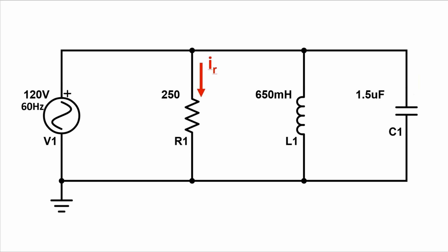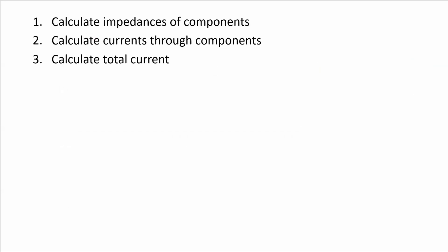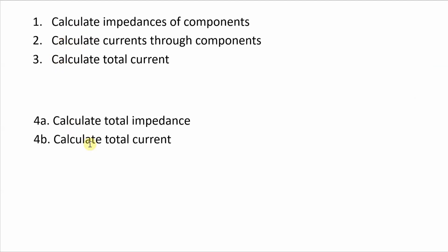I'm also going to calculate the current through the resistor, the current through the inductor, the current through the capacitor, and then finally the total current. The process I'm going to follow is to calculate the impedances of the components, calculate the currents through the components, and then calculate the total current. I'll also do an alternative analysis where I will calculate the total impedance and then use that value to calculate the total current.